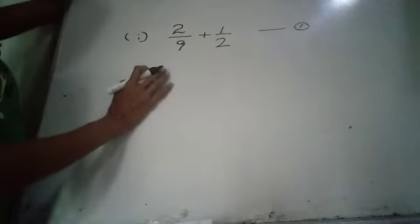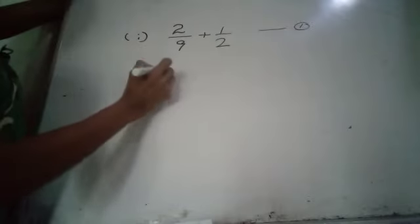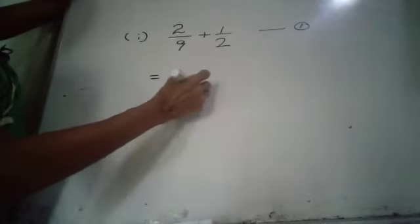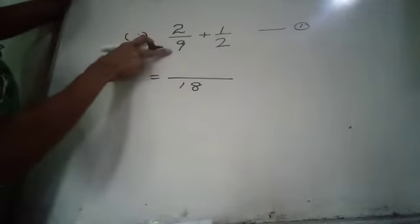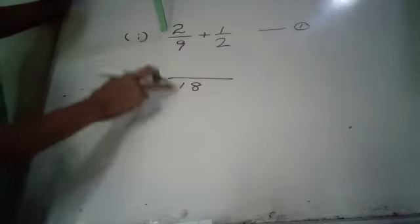Now we add these two fractions. The denominators are not equal, so we find the least common multiple of these denominators. There are no common factors between 2 and 9, so we multiply 2 and 9: 2 times 9 is 18. So the LCM is 18, which equals 9 times 2.